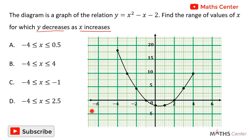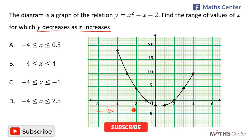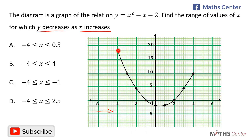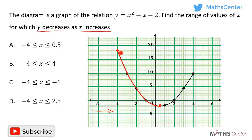The values of x increase as we move from left to right. As we move from left to right along the x-axis, the values of x increase. We can see that the curve starts at a certain point, and as we move from left to right, the values of y reduce. They continue to reduce until we get to the turning point.